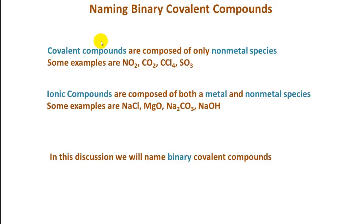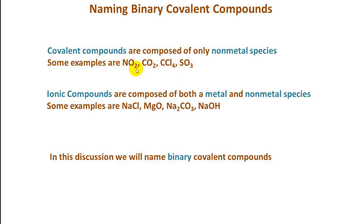First, we need to know there are two major divisions of compounds: covalent compounds and ionic compounds. Covalent compounds are composed of only non-metal species. Here are some examples — nitrogen, oxygen, carbon, chlorine, and sulfur are all non-metals, so each one of these compounds is composed of only non-metal atoms.